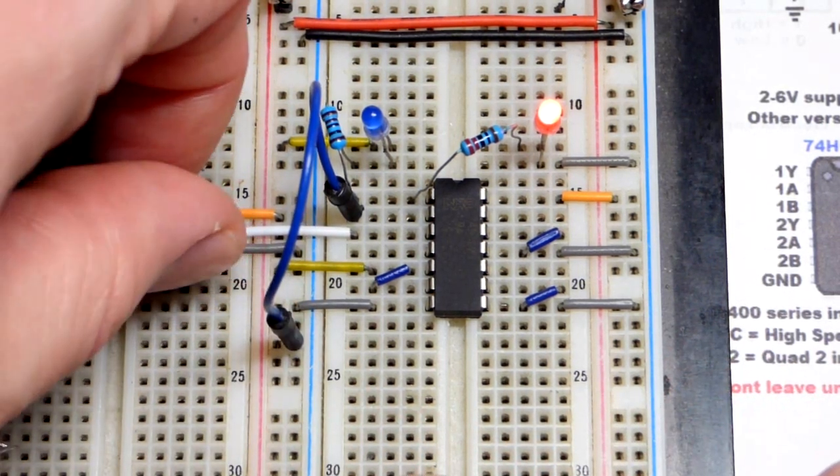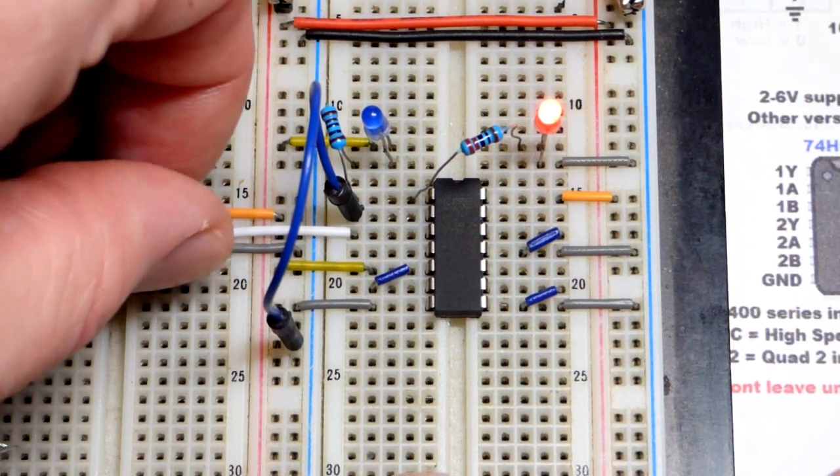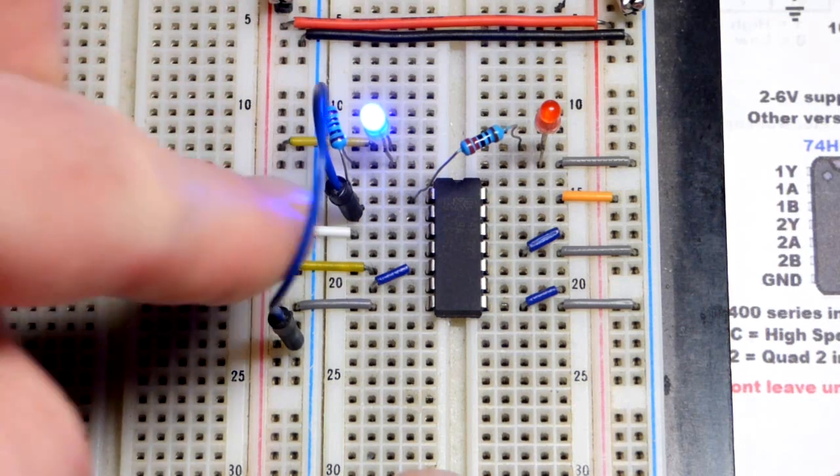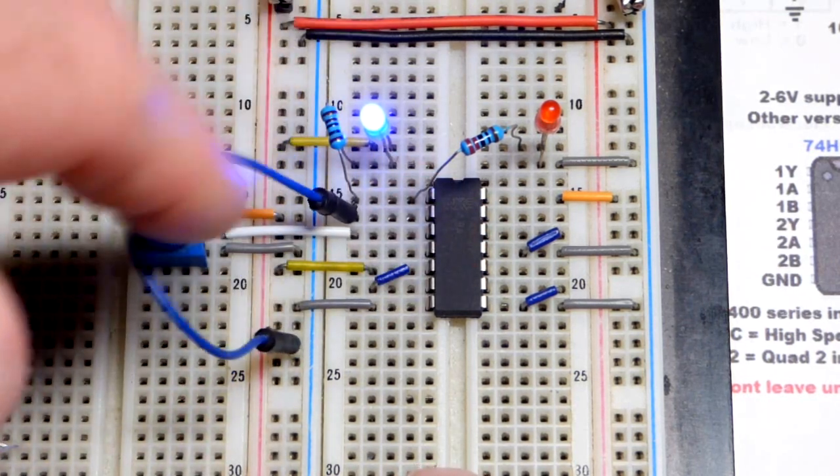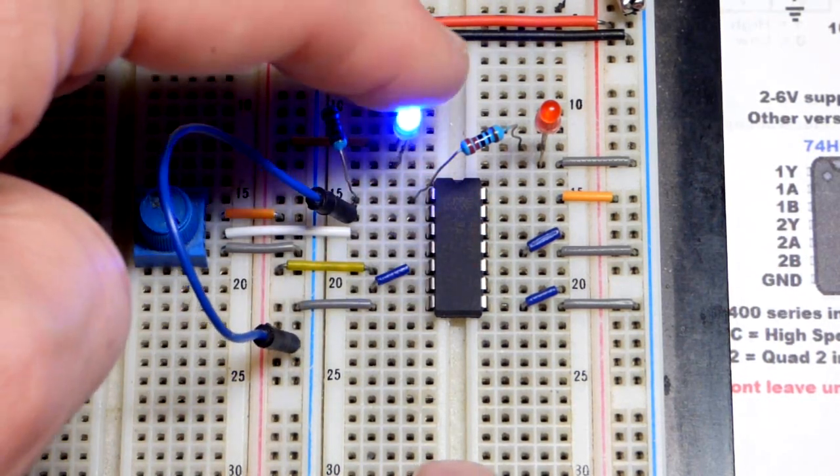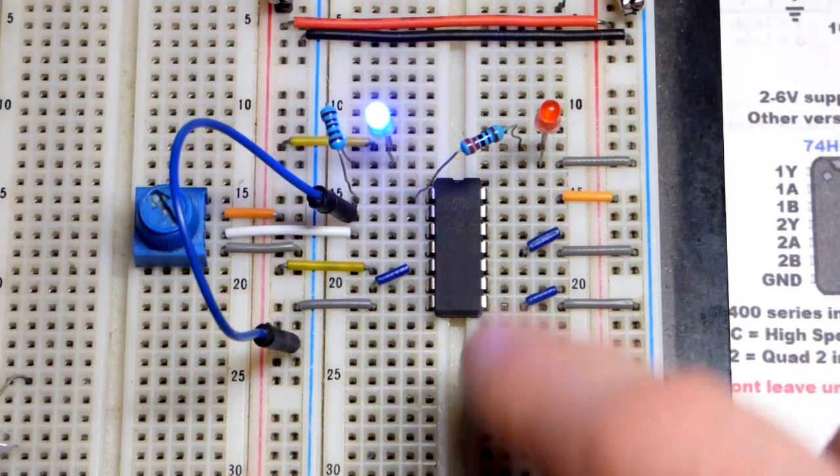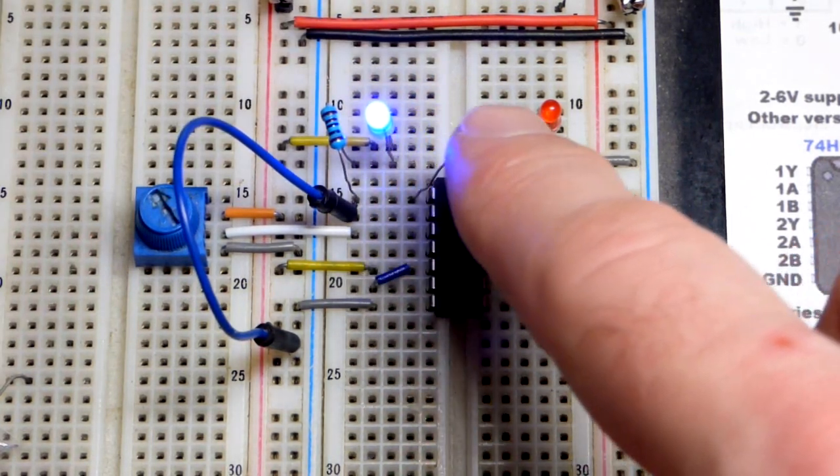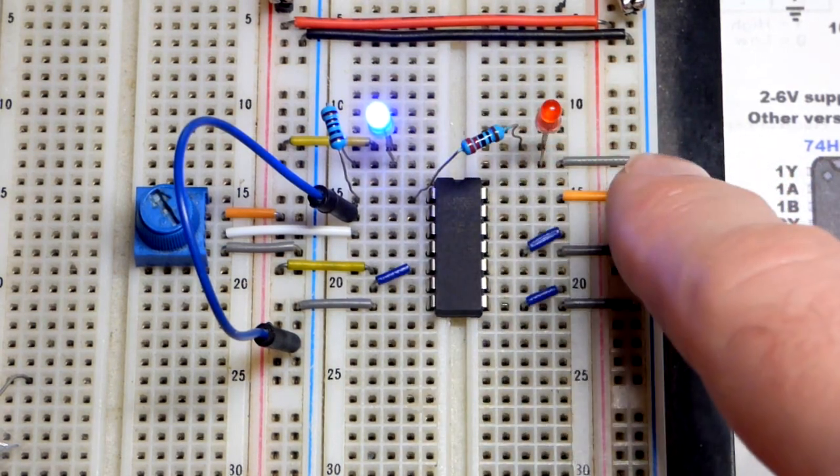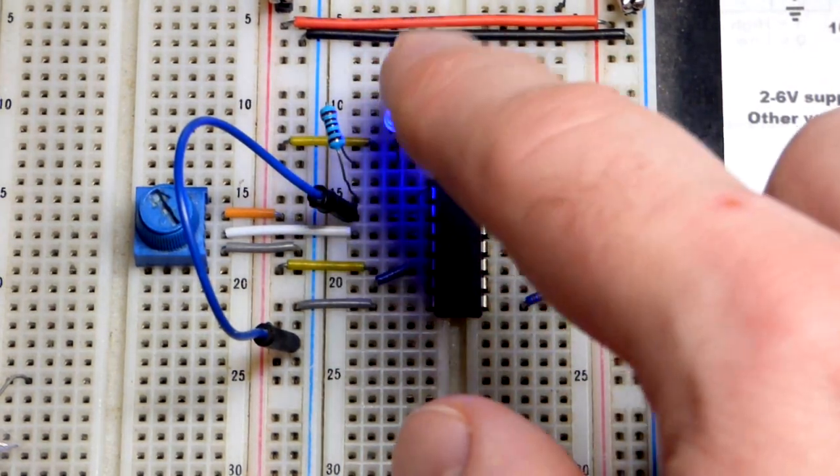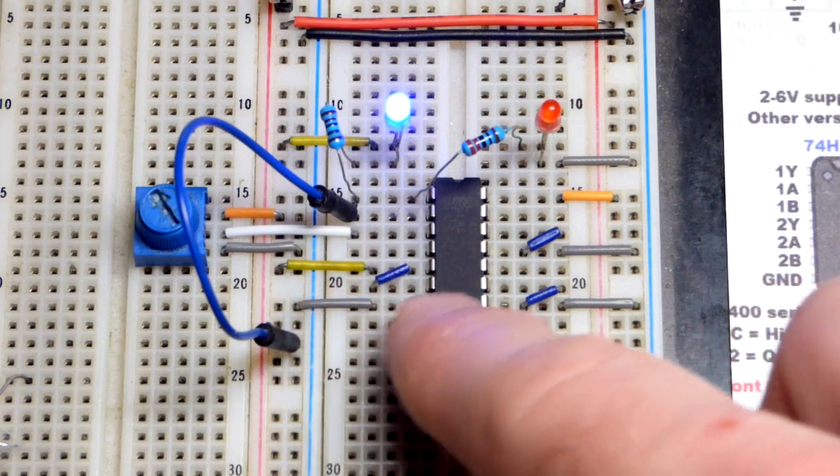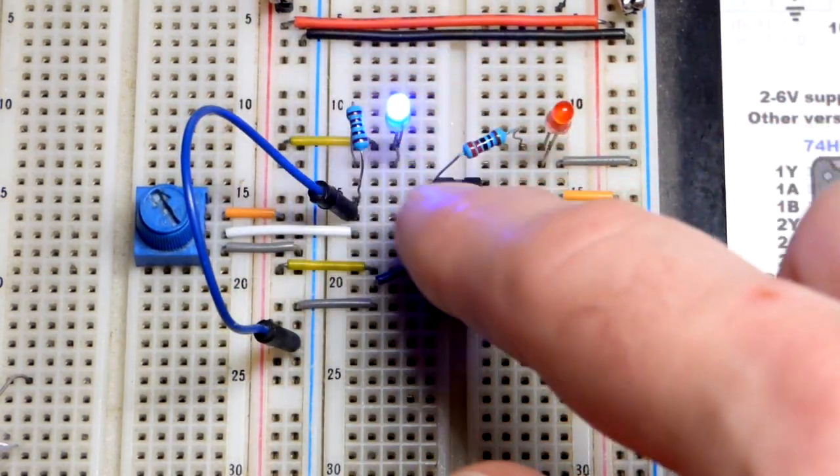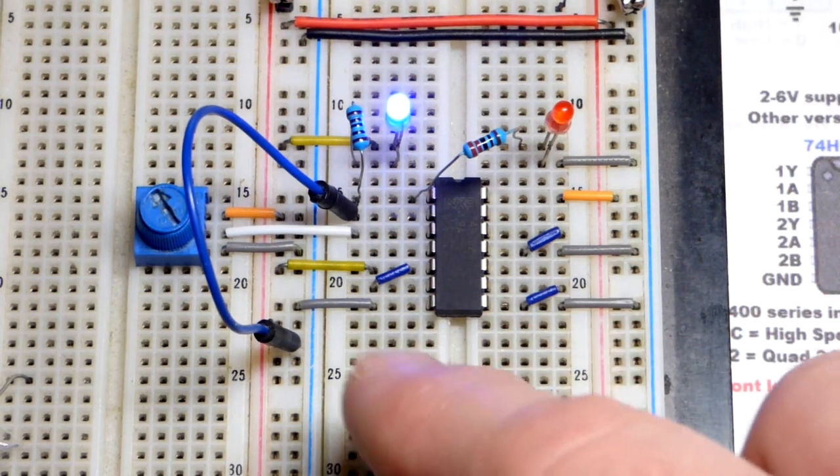We're going to turn the trim pot towards the more positive supply. Once we get a high enough voltage, it's just signal voltage, then we have a low output. You can see blue there. When the red LED is lit, it's outputting the positive supply. That's considered high. Now we got the blue LED.